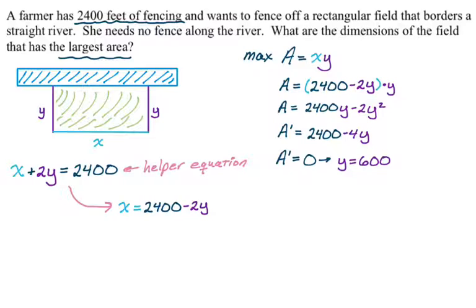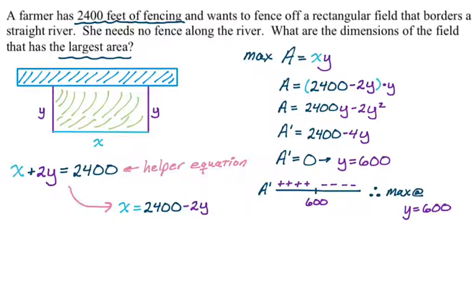With these problems you want to verify you're getting what you expect. We're looking for the largest area, so a maximum. Using the first derivative test: plugging in something less than 600 gives a positive derivative; something greater than 600 gives a negative. So there's a maximum at y equals 600. That's not sufficient for the AP exam, but good enough when running through optimization problems quickly.